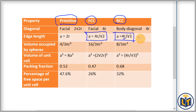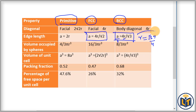Since we need to find the radius R, we rearrange the BCC relation using cross multiplication. The result is: R equals root-3 times a divided by 4. We can now apply this formula to calculate the radius of the iron atom.